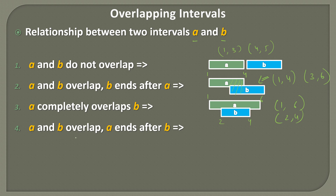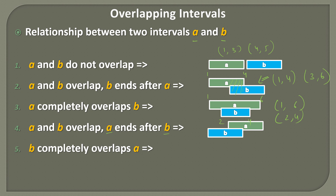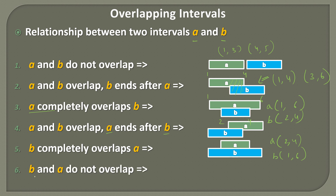The fourth case is A and B overlap but A ends after B — this is pretty much the same as case 2 but with A and B swapped. The fifth case is B completely overlaps A, which is the same as case 3 with the order reversed. Here B would be 1,6 and A would be 2,4. The sixth case is B and A do not overlap, which is the same as case 1. So these are essentially symmetric cases.